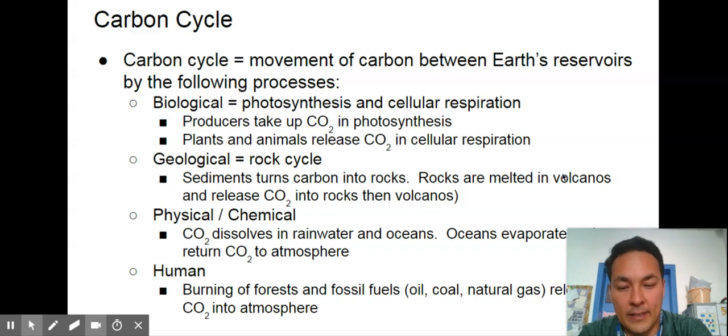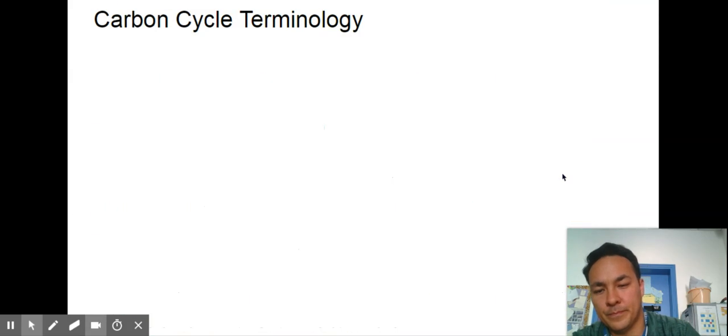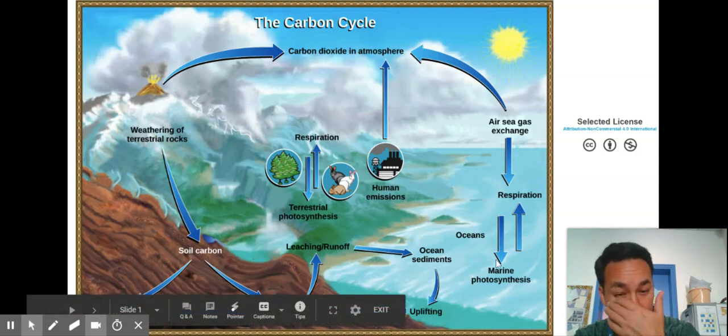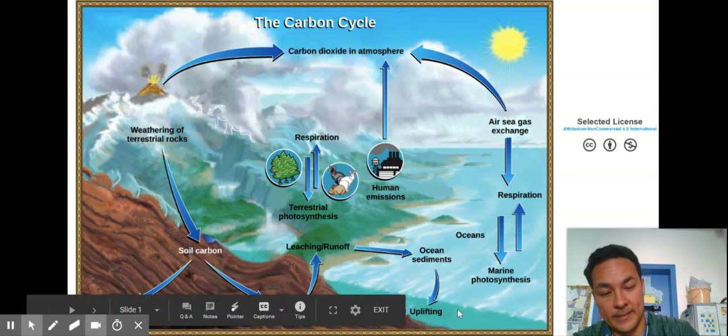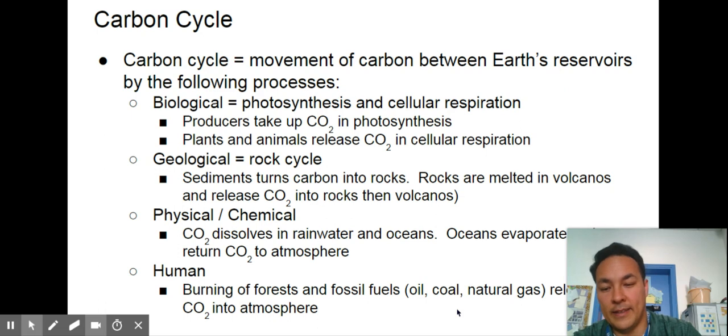And then there's a physical and chemical feedback group as well. Rain can come down into the ocean or even on land, and it can carry carbon dioxide with it. That is a physical process. As the oceans evaporate, it returns that carbon dioxide to the atmosphere. Many of you did a case study on acid rain at Bear Pond that was kind of similar. And then there's human impact.